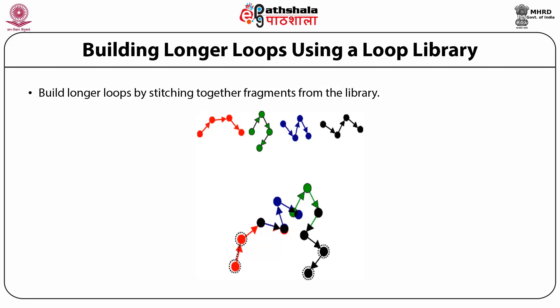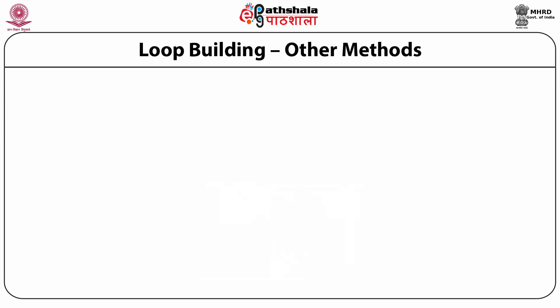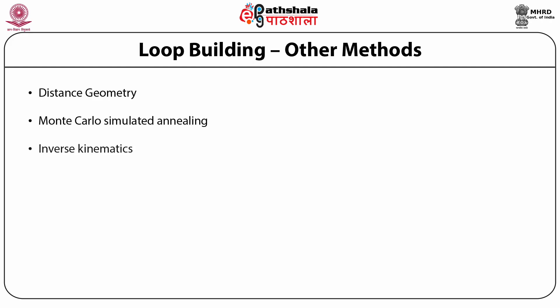For longer loops, sometimes you stitch shorter loops together, but accuracy in this kind of step is rather poor. Other methods being used include distance geometry-based methods, Monte Carlo simulated annealing, and a technique called inverse kinematics which is becoming pretty popular. However, systematic sampling — looking at the database and finding candidate loops — seems to be the most popular approach currently.